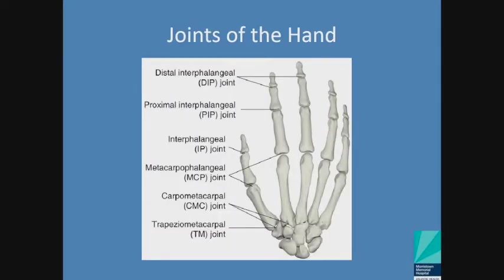When we talk about the joints of the hand, we typically talk about the distal interphalangeal joints — your DIP joints — where the middle and distal phalanges meet. The proximal interphalangeal joints are where your proximal and middle phalanges meet. Your metacarpophalangeal joints are where metacarpals meet their respective proximal phalanges. Carpometacarpal articulations, or CMC joints, are where metacarpals meet carpal bones. The one that gets the most attention is your trapeziometacarpal joint, or your thumb carpometacarpal articulation.